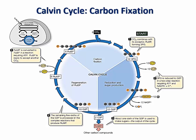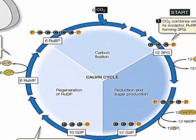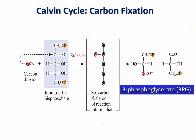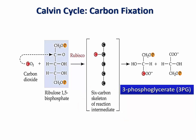Let's look at the first process, which is carbon fixation. In this process, carbon is fixed by combining carbon dioxide with a five-carbon compound known as ribulose bisphosphate. This initial fixation reaction results in the formation of a six-carbon intermediate compound that is unstable. It splits into two molecules of 3-phosphoglycerate, or 3PG.